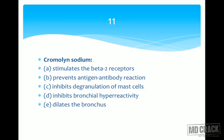Analyzing the options: stimulating beta-2 receptors implies an adrenergic agonist — chromolin is obviously not that; those would be epinephrine, isoprenaline, salbutamol, etc. Preventing the antigen-antibody reaction on the mast cell surface — can chromolin do that? Obviously no. The option 'inhibits degranulation of mast cell' — does that sound right? Yes, that's the answer.